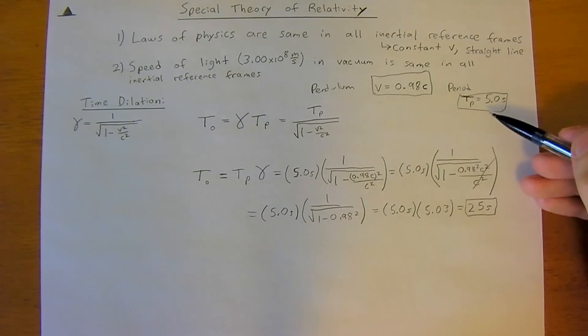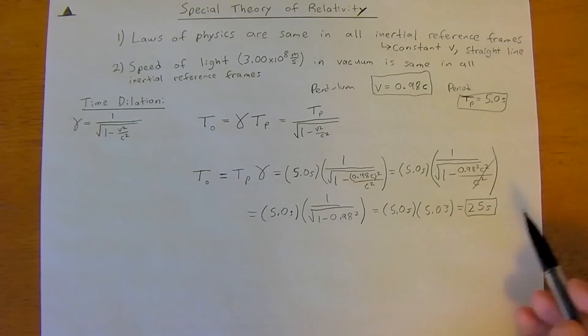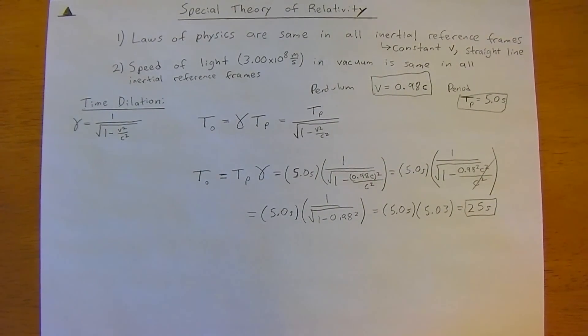So, this means that the person on the spaceship will observe the period of the pendulum to be 5 seconds, but the observer, the external observer, viewing the events, say on Earth, will view the period of the pendulum to be 25 seconds. So, this is just a really simple equation just to get you used to how to plug it into the formulas.